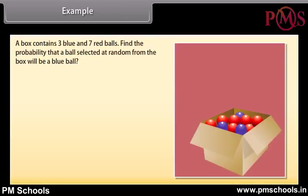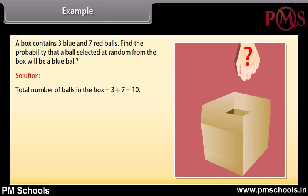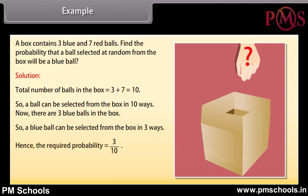A box contains 3 blue and 7 red balls. Find the probability that a ball selected at random from the box will be a blue ball. Solution: Total number of balls = 3 + 7 = 10. So a ball can be selected in 10 ways. There are 3 blue balls in the box, so a blue ball can be selected in 3 ways. Hence, the required probability = 3/10.